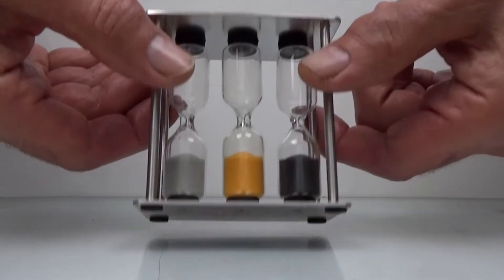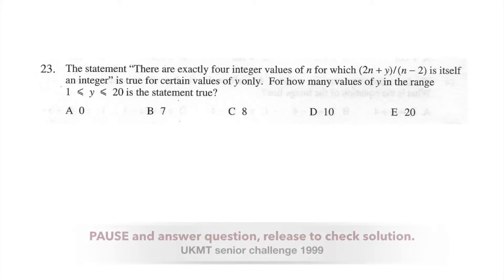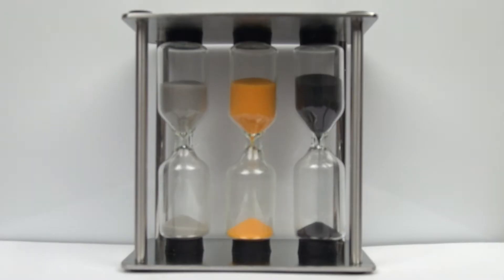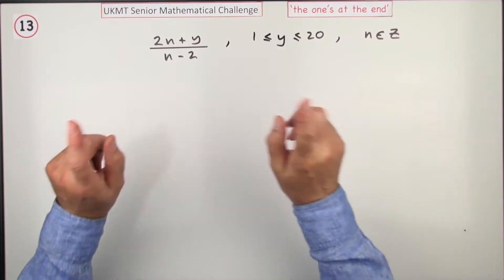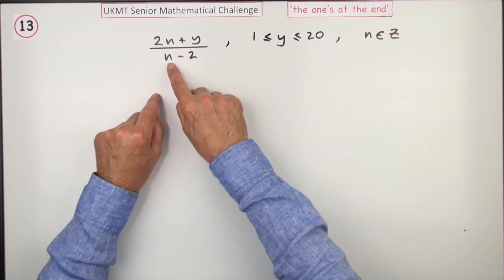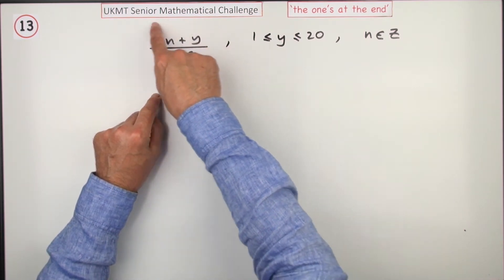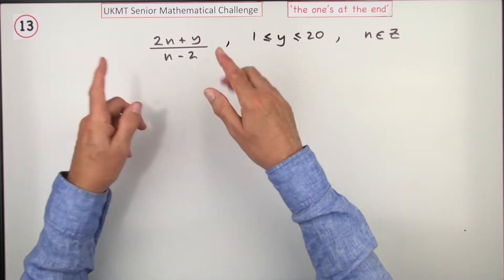Ready, and go. There are exactly four integer values of n for which this division itself comes to be an integer.